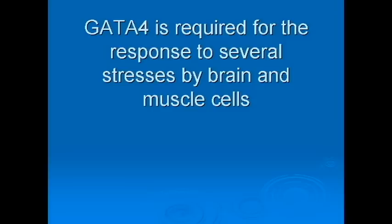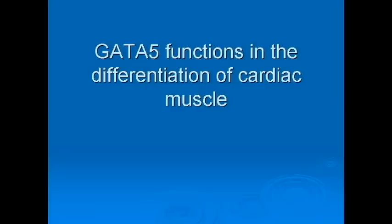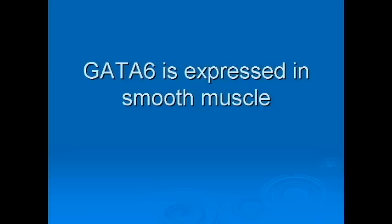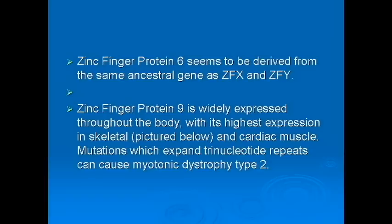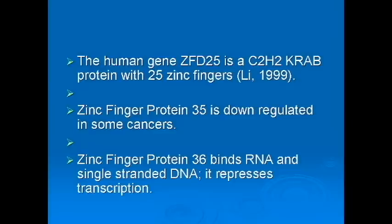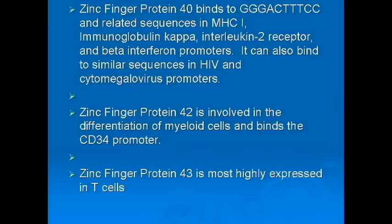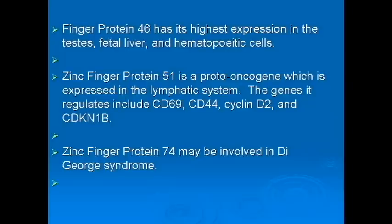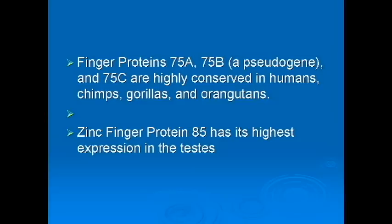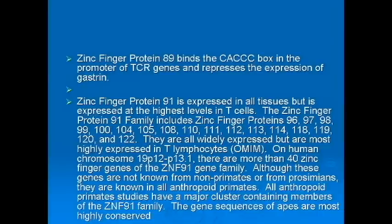There are hundreds and hundreds of zinc finger proteins in the human genome. This huge gene family can be broken into subfamilies. The largest subfamily is the C2H2, or Krüppel group, because of a conserved region of about 28 amino acids which uses two cysteine and two histidine residues to bind zinc. There are an estimated 700 C2H2 zinc finger proteins in the human genome alone.